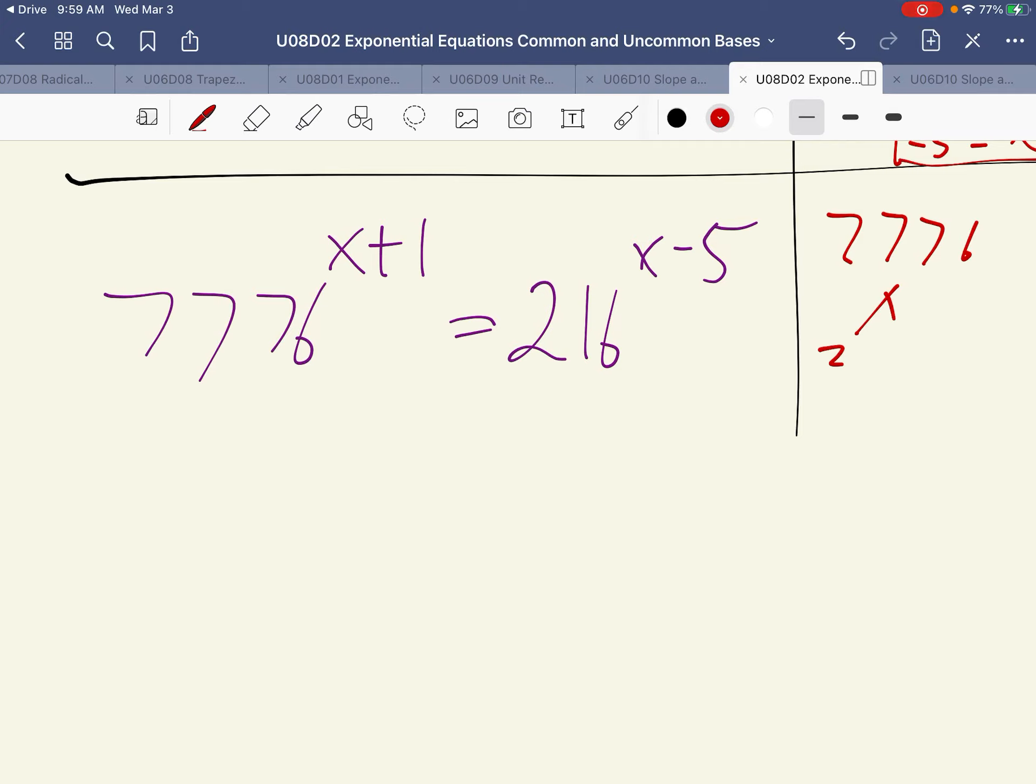7,776 divided by 2 is 3,888. Divide by 2 again, get 1,944. We'll do that again. Get 972, and 2. Do it again.